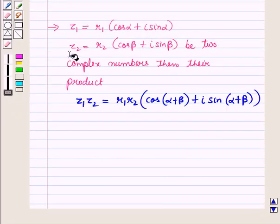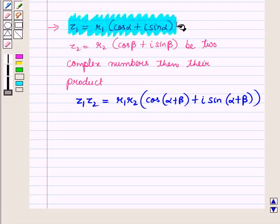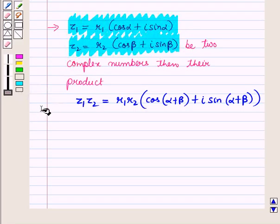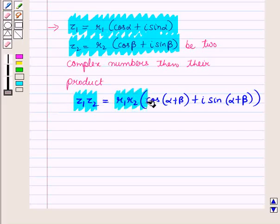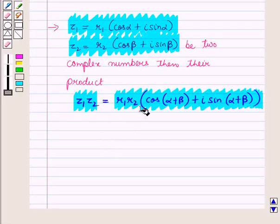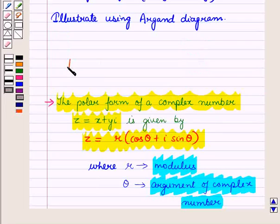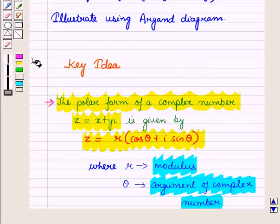The second result is: if z1 equals r1 into cos alpha plus iota sin alpha, and z2 equals r2 into cos beta plus iota sin beta, then their product uses these forms. These results will work out as the key idea for solving the given question.